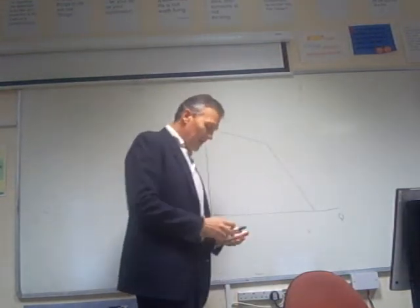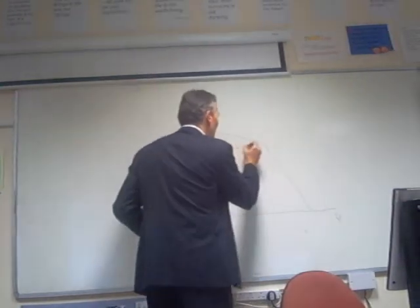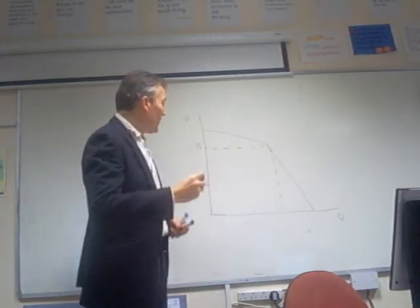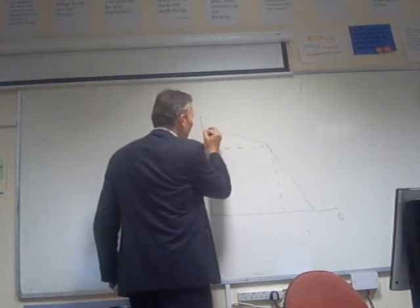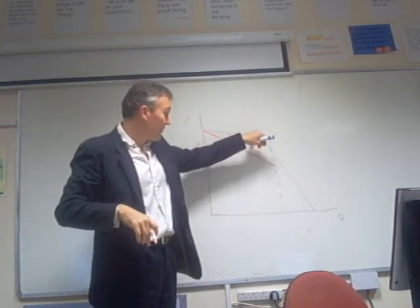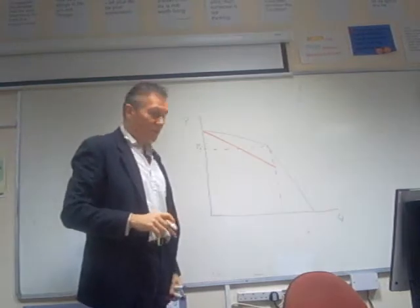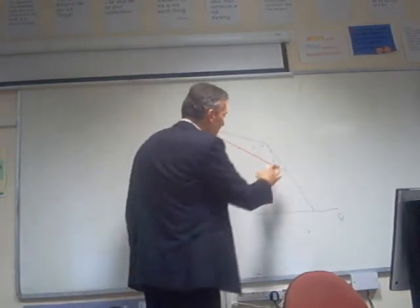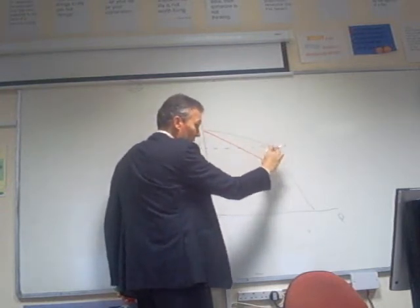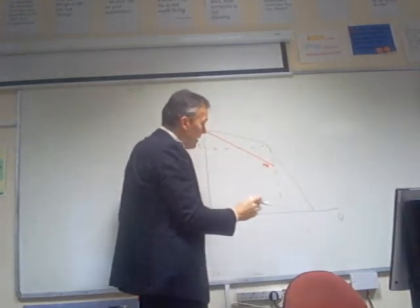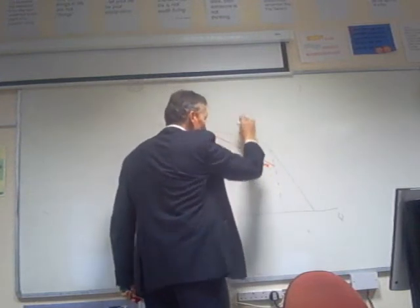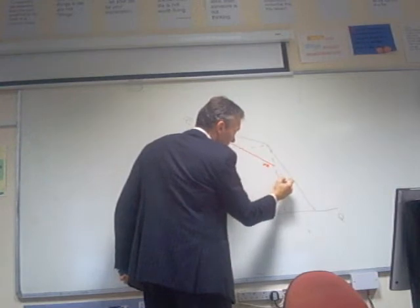This becomes clearer when we draw in the marginal revenue curve. As we know, the marginal revenue curve slopes away at twice the rate of the average revenue curve — and here the average revenue curve is the demand curve. For the upper elastic portion, the MR falls at twice that rate; for the lower inelastic portion running up here, the MR would also be falling at twice the rate of that steeper segment.